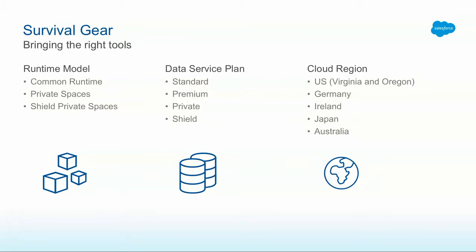For our Shield private spaces, this is something you may need if you have certain compliance mandates, say PCI compliance. It's a lot of tweaks, configurations, and bolstered features that allow you to meet those compliance mandates. Very closely mirroring the runtime model are our data service plans. Heroku offers a few types of data stores — the main one is a relational database, that's Heroku Postgres, which is PostgreSQL. The standard, premium, private, and Shield plans all have the differences you'd expect across data service plans, like size and number of connections, and they mirror the isolation and security guarantees of our runtime model plans.